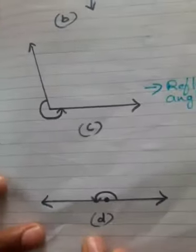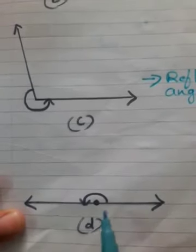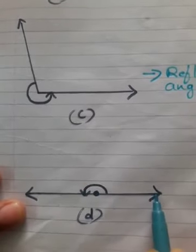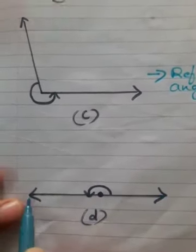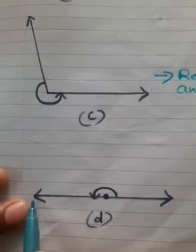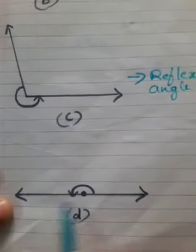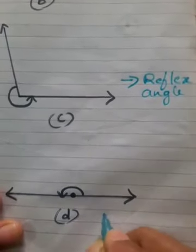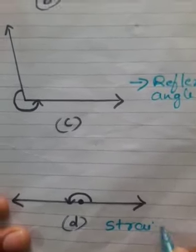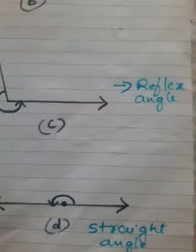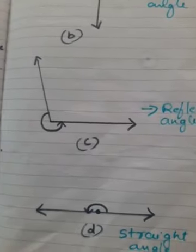Next figure: one arm is at 0 degree and the other arm is at 180 degree. The measure of this angle is 180 degree, so it is called a straight angle.